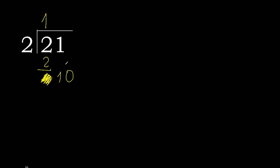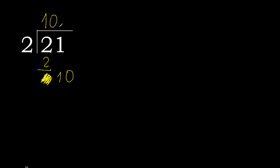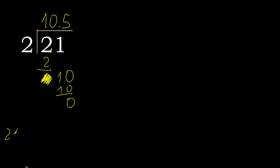Always complete with 0 here, with a point. There are 2 numbers here, therefore 0 point. Because here there are 2 numbers. 10. 2 multiplied by 5 is 10. 10 minus 10 is 0. Finish it. 21 divided by 2 is 10.5.